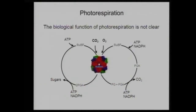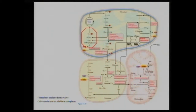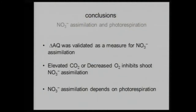Biochemically, the photorespiration cycle involves the chloroplast, mitochondria, and peroxisome. The hypothesis is that photorespiration stimulates a malate shuttle and more reductant — NADH — becomes available in the cytoplasm, helping with nitrate assimilation. Conclusions: delta AQ was validated as a measure; elevated CO2 or decreased O2 inhibits shoot nitrate assimilation; and nitrate assimilation depends on photorespiration.